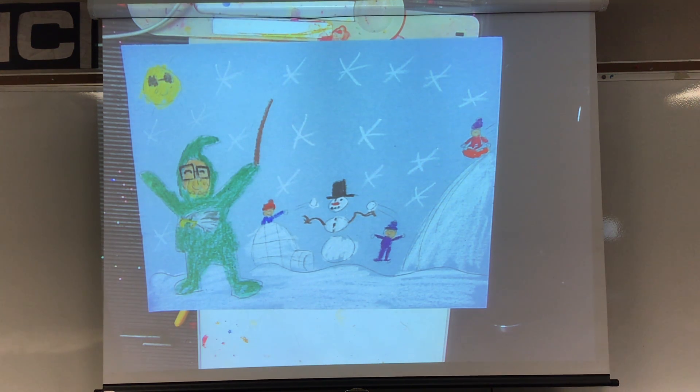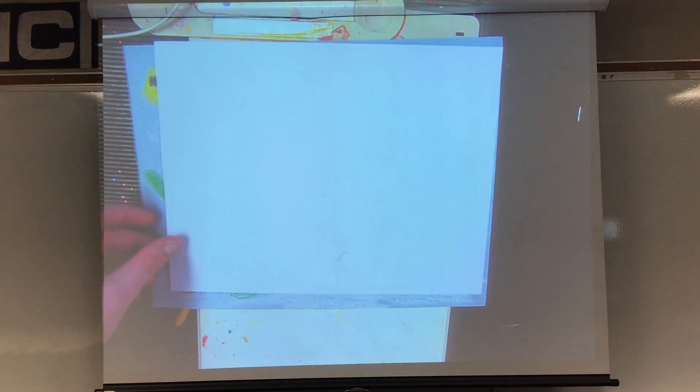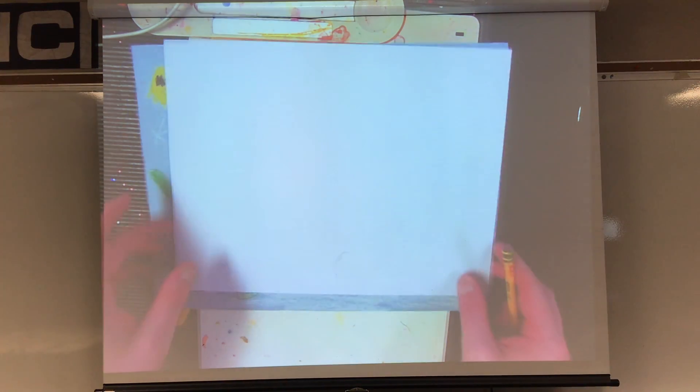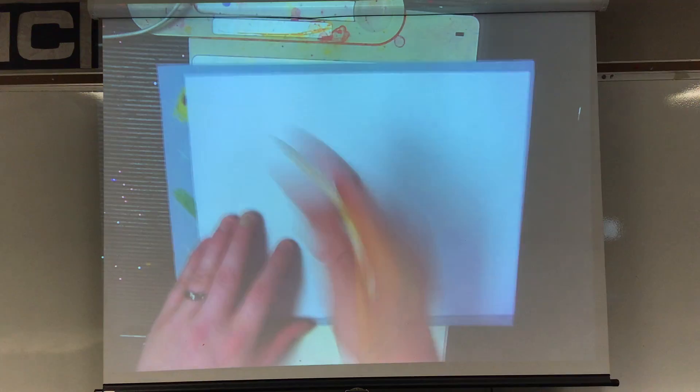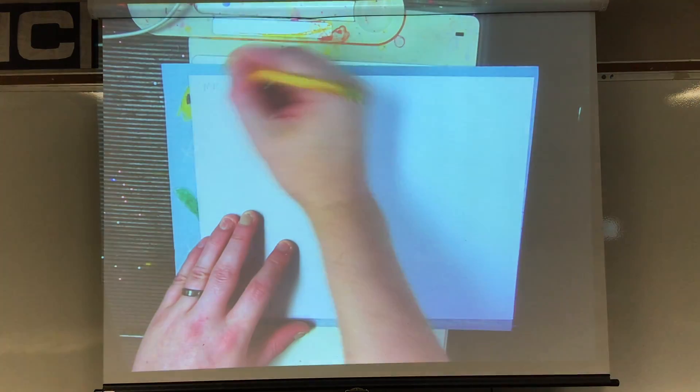So this week we are going to draw ourselves as if we were Peter in the snowy day. So let's see what happens. So my paper is hamburger style this week, as you can see, left to right, horizontal. I'm going to put my name in the upper corner, Mr. Mush.